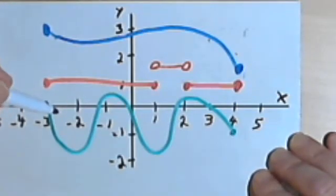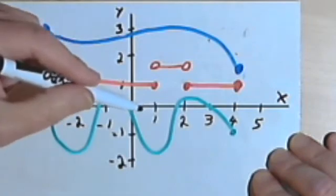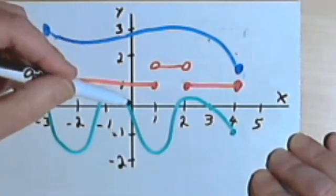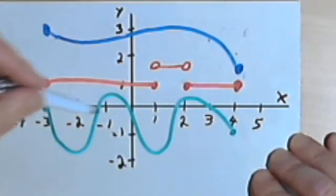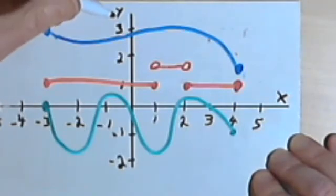The domain is the input that a function can have. If I'm given a graph, the input that the function can have is any place on the horizontal axis, which is the input axis, that will allow me to find what the output would be. If I start at negative 3, I can find an output, a vertical axis value or y-value, for each of my graphs.